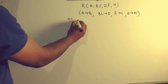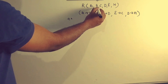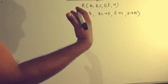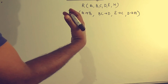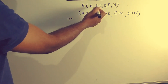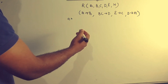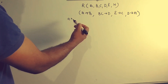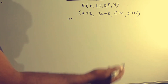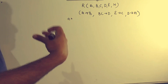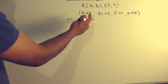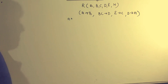The closure property includes A closure, B closure, and C single attributes. We are going to talk about a combination of attributes, then we are going to define a super key. We set a set list, and it can be used to identify.